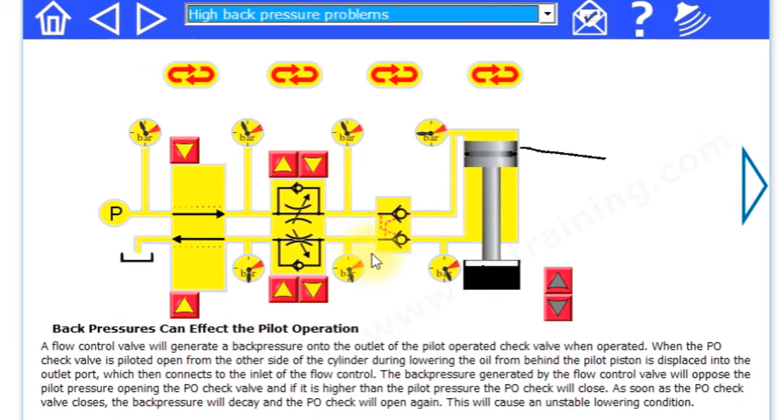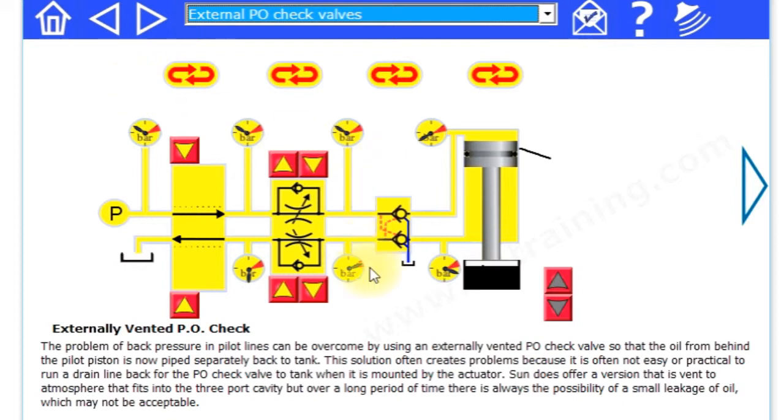We can put in some back pressure problems. I'll show you what happens with back pressure problems because you can get them on PO check valves bouncing and you may want to pilot externally to remove them.